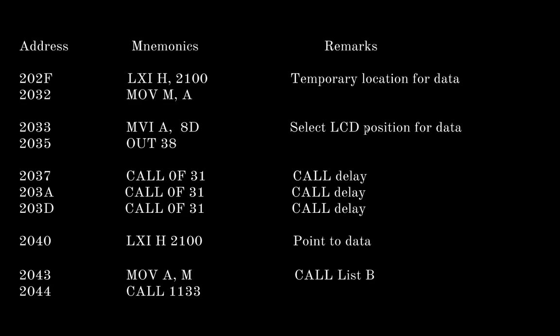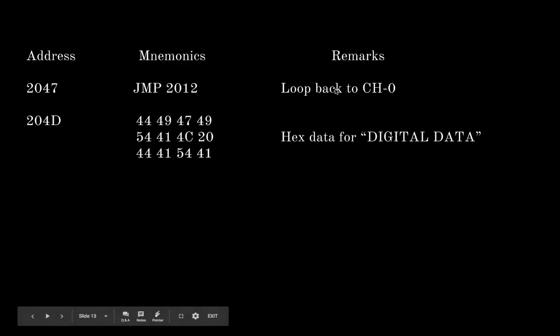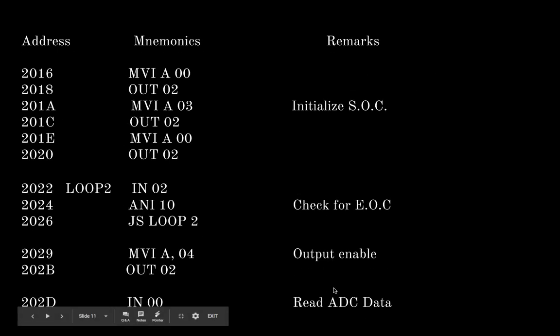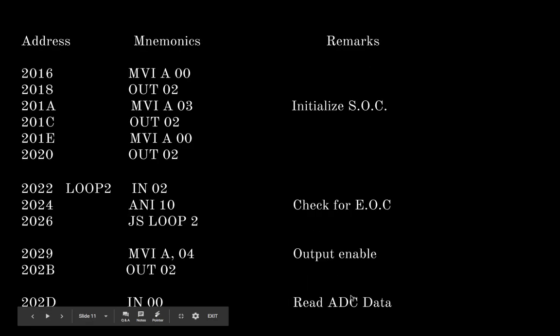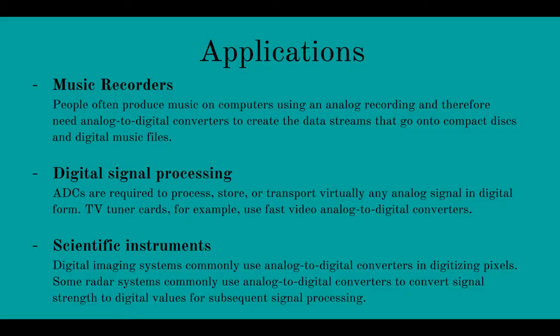Here we store it in the temporary location which is 2100. Now we select the LCD position for the data and we have a call delay. Then we point to the data 2100 where we stored the data we got from the ADC. We call the list B, and we loop back to channel 0, and hence we'll be finally able to show the output on the LCD screen.